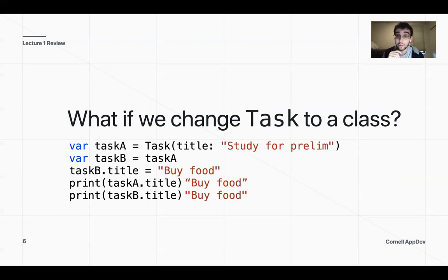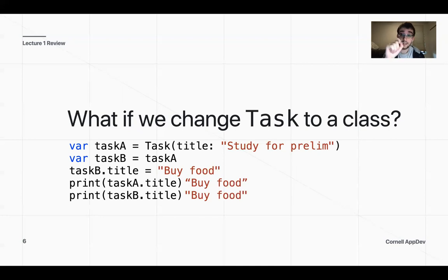That's different when Task is a class. In that case, Task A is going to be 'buy food' and so is Task B, because when you set Task B equal to Task A, Task B is now a reference to Task A. So whenever you do Task B dot title, you're changing Task A's title. You might have encountered this in the homework — if you tried to use 'if var' for section 2.5 to create the year dictionary, dictionaries are a value type, so you were actually creating a copy of it.